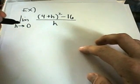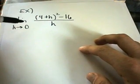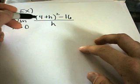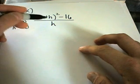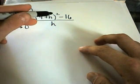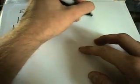Okay, in this limit example, we'll try to plug in h equals 0. Notice if we do plug in h equals 0, we'll get 4 squared, which is 16, minus 16.